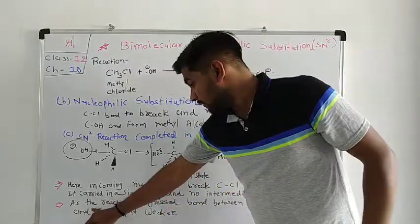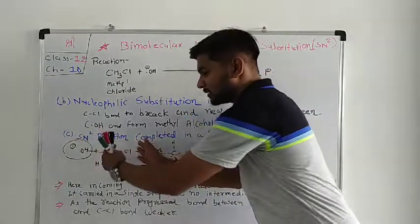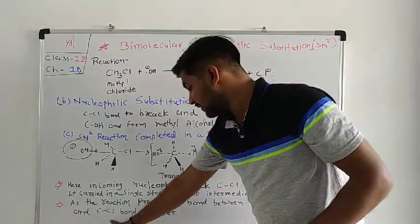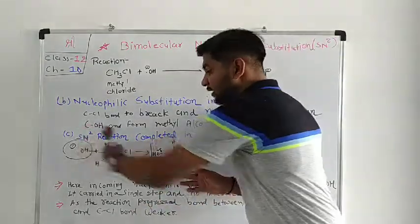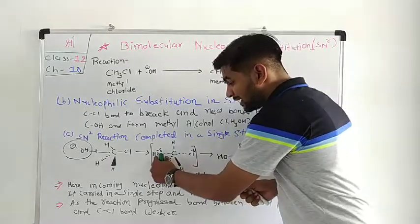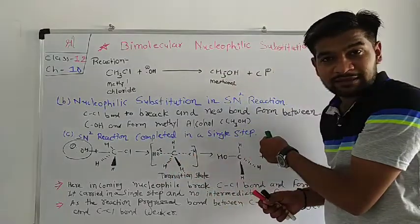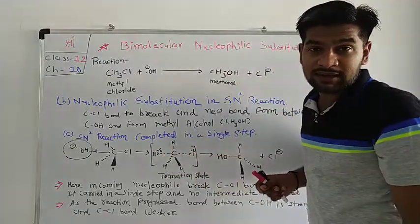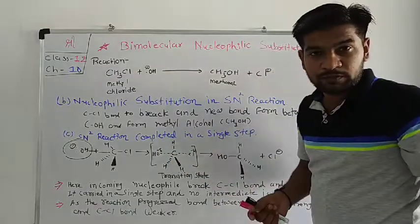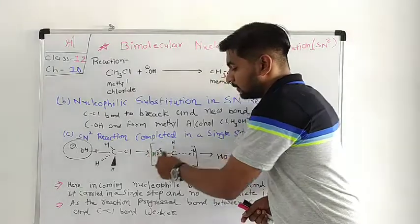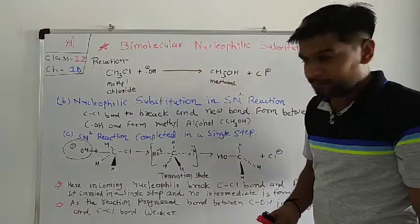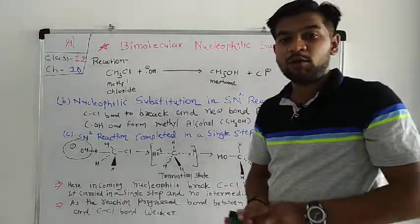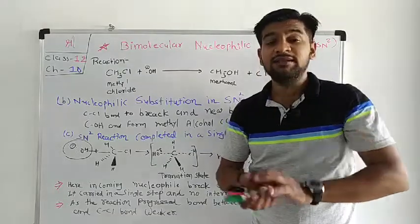As the reaction progresses, the bond between C and OH becomes stronger, and the C–Cl bond becomes weaker. As OH comes closer, Cl moves farther away. The more OH approaches, the more C–Cl tries to leave. This is because OH⁻ is a strong nucleophilic reactant, and carbon is tetravalent — so when one group enters, the other must leave.